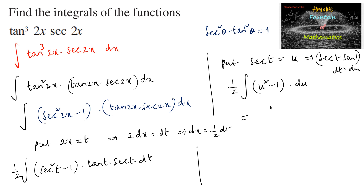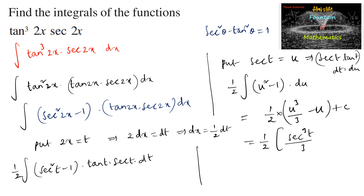This equals (1/2)[u³/3 - u] + C, which gives (1/6)u³ - (1/2)u + C. Substituting back u = sec t, we get (1/6)sec³t - (1/2)sec t + C.